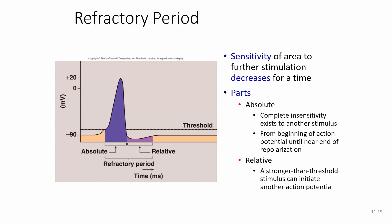The parts of the refractory period: we have the absolute refractory period, where complete insensitivity exists to another stimulus from the beginning of the action potential until near the end of repolarization — like pressing the button and nothing happening no matter how many times you press it. Then we have the relative refractory period, where a stronger-than-threshold stimulus can initiate another action potential.